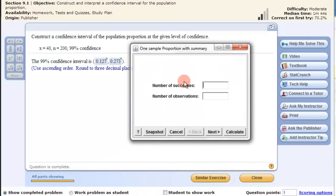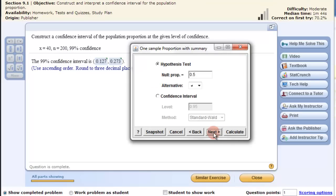Then we put the number of successes - that would be the x value. The number of observations is the n value. Click next.